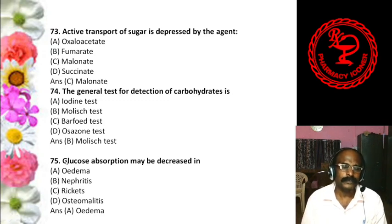Question 60: Which of the following is an epimeric pair? A. Glucose and fructose, B. Glucose and galactose, C. Galactose and mannose, D. Lactose and maltose. The answer is B, glucose and galactose — they are epimers. This is a very, very important question; questions are coming from the topic of epimers.